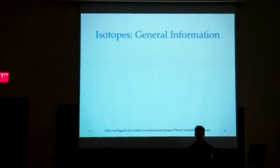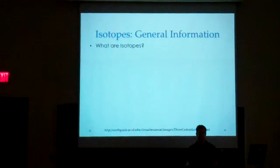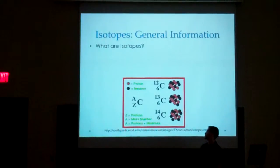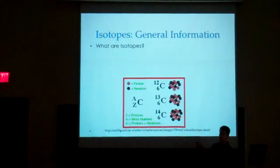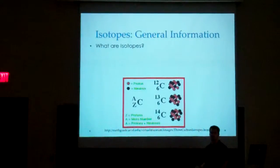Some general information on isotopes. An isotope is very important. An isotope is when you have a different amount of neutrons present at the nucleus of an atom of an element, which can be confusing. So I have an example to make it a little easier. For carbon, there are three main isotopes you're going to deal with: carbon-12, carbon-13, and carbon-14. In carbon-12, you have six protons and six neutrons. Carbon-14 has six protons and eight neutrons. So it's the varying amount of neutrons that makes different isotopes.